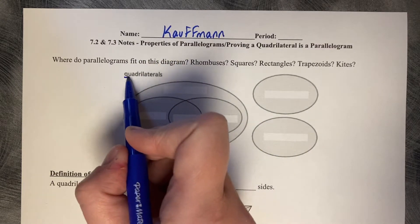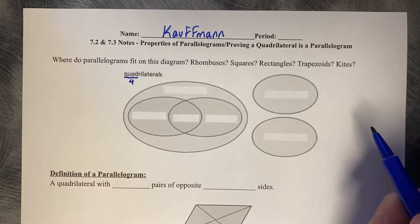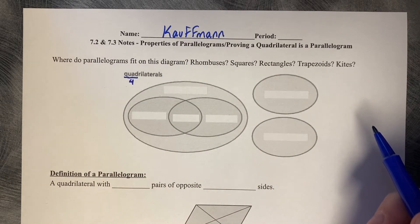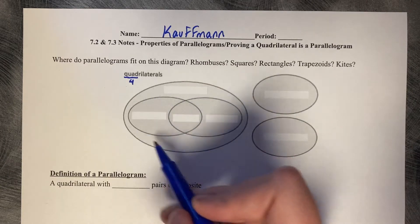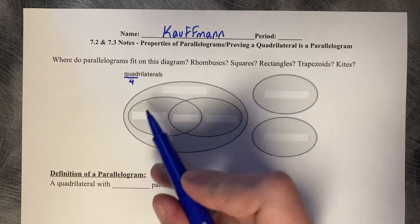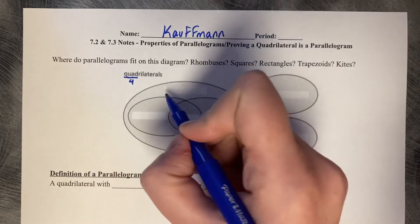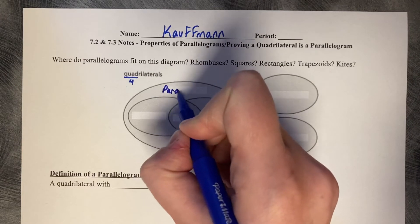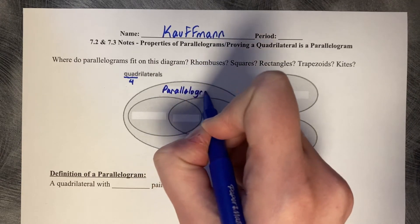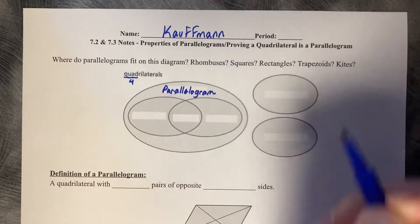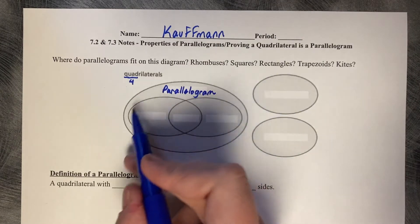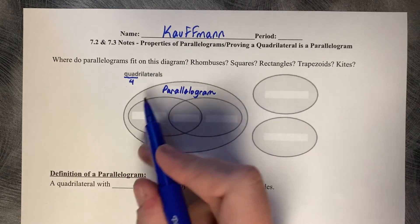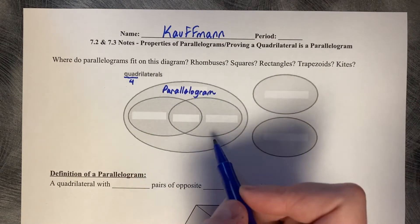Remember that quadrilaterals means four sides — any four-sided figure. The top of the hierarchy of four-sided figures is parallelograms. Parallelogram is our outer figure.